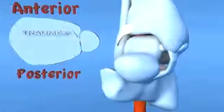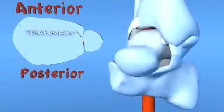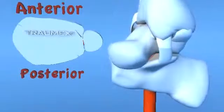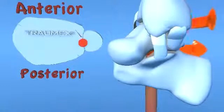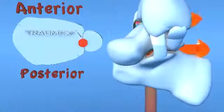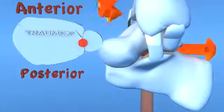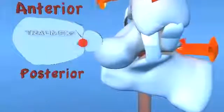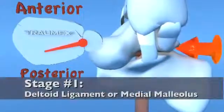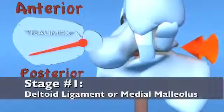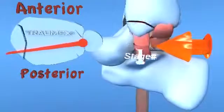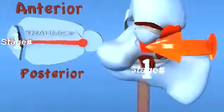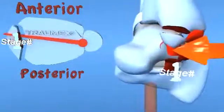With the foot in a fixed pronated position, the forces start along the medial axis of the tibia. The leg undergoes an internal rotation, creating tension on the deltoid ligament complex. In a stage 1 injury, one of two pathologies may occur: rupture of the deltoid ligament complex or a transverse fracture of the medial malleolus.